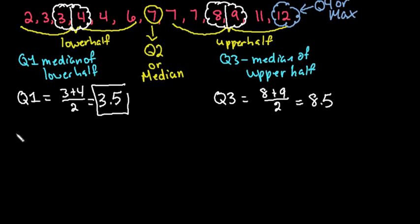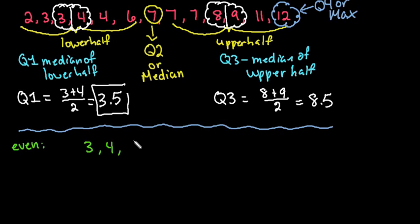Just to show you what we would do if we had an even number to start with. Let's say that we had an even number. So let's say that our data set is 3, 4, 5, 7, 9, 10, 11, and 13.